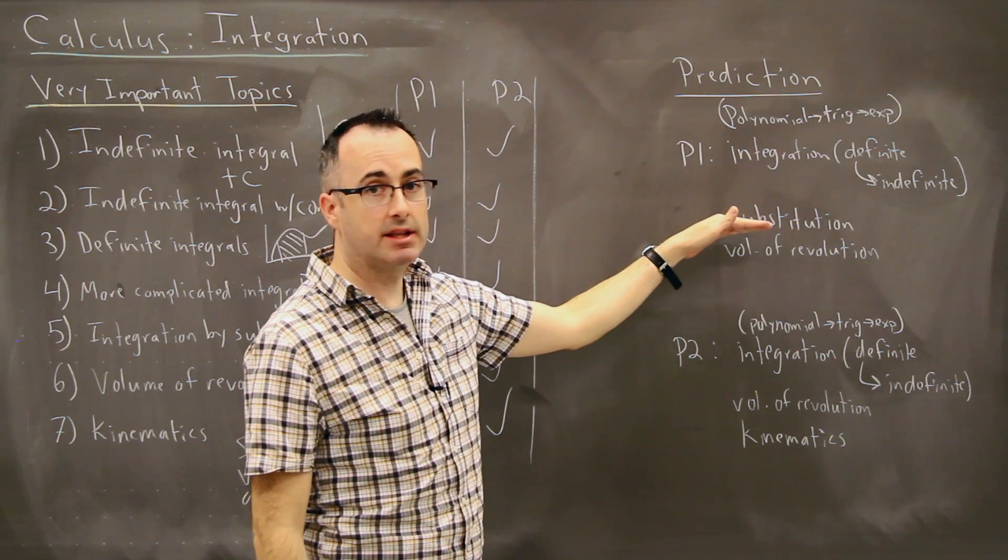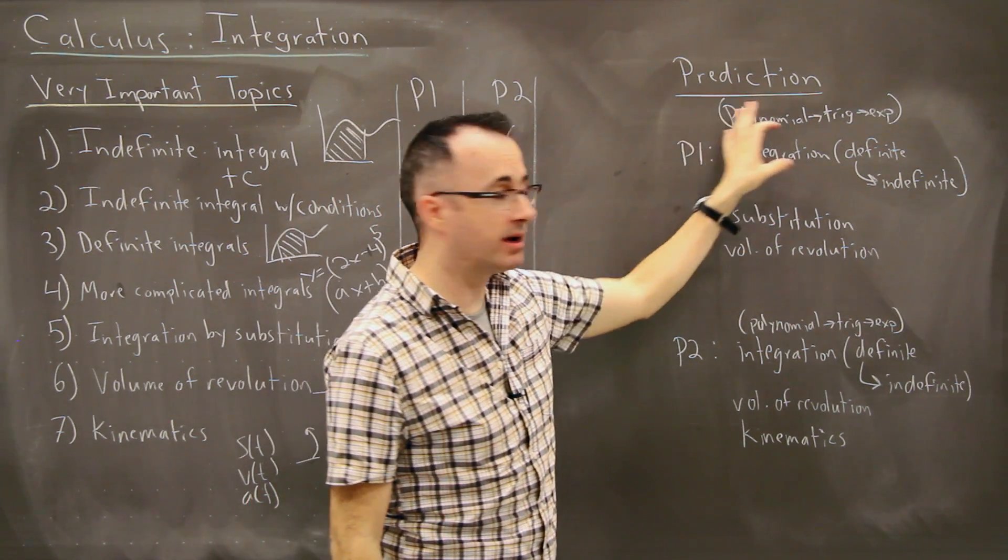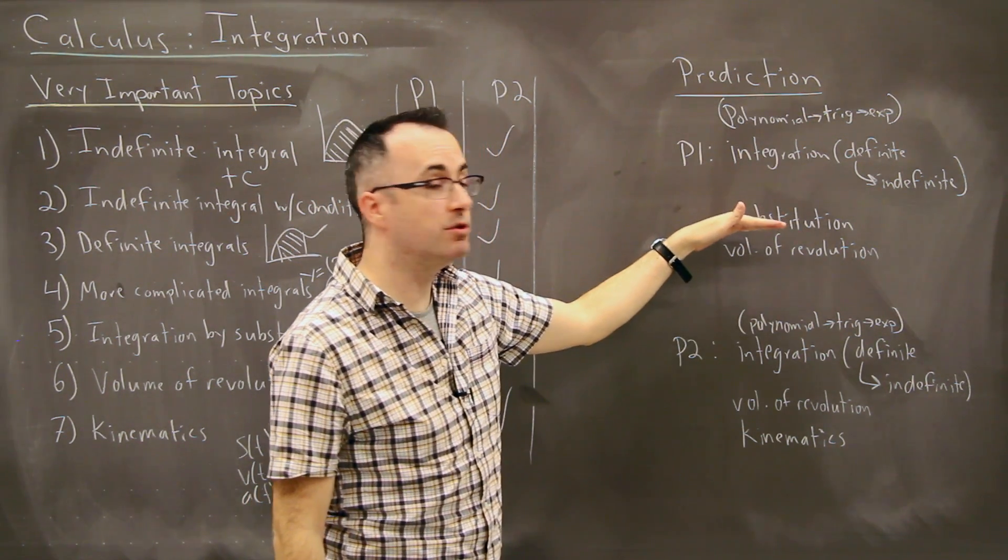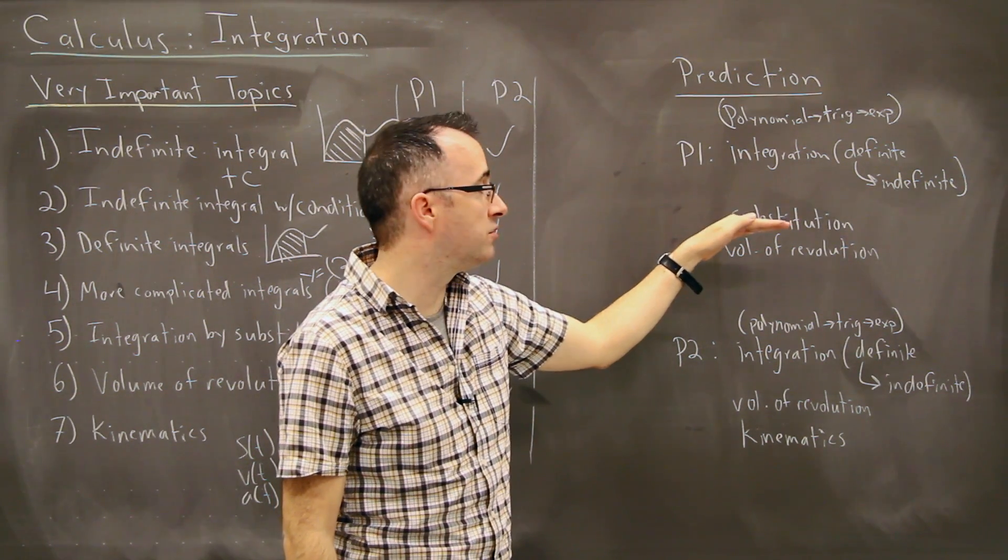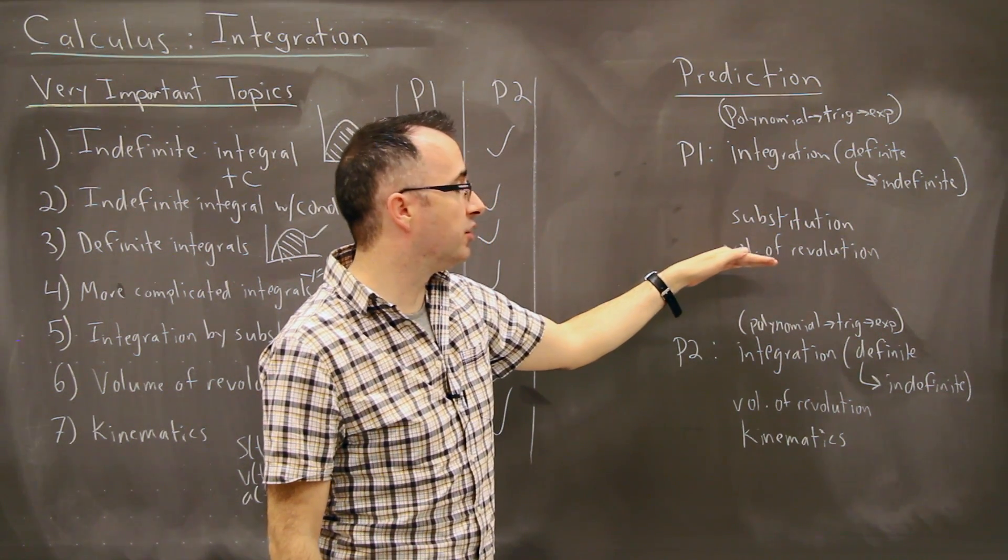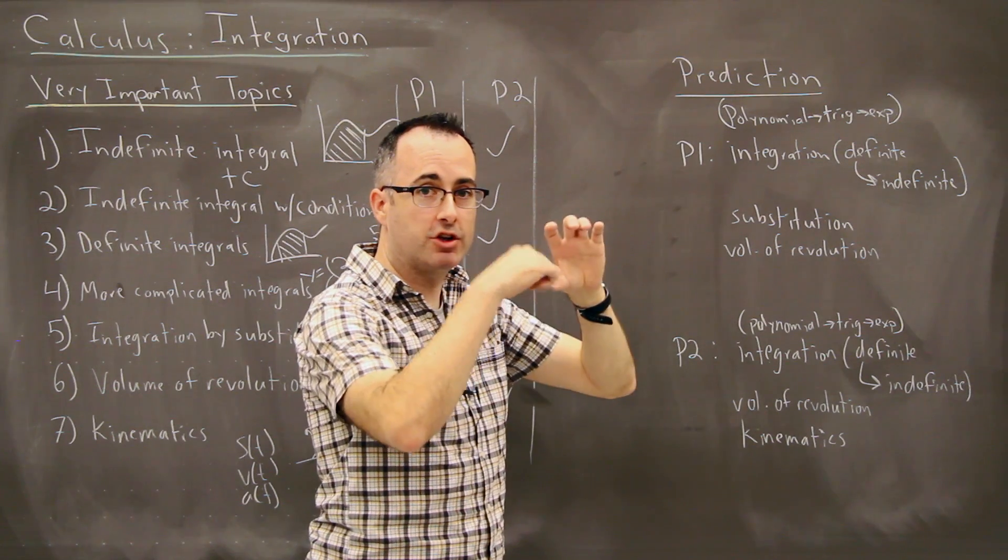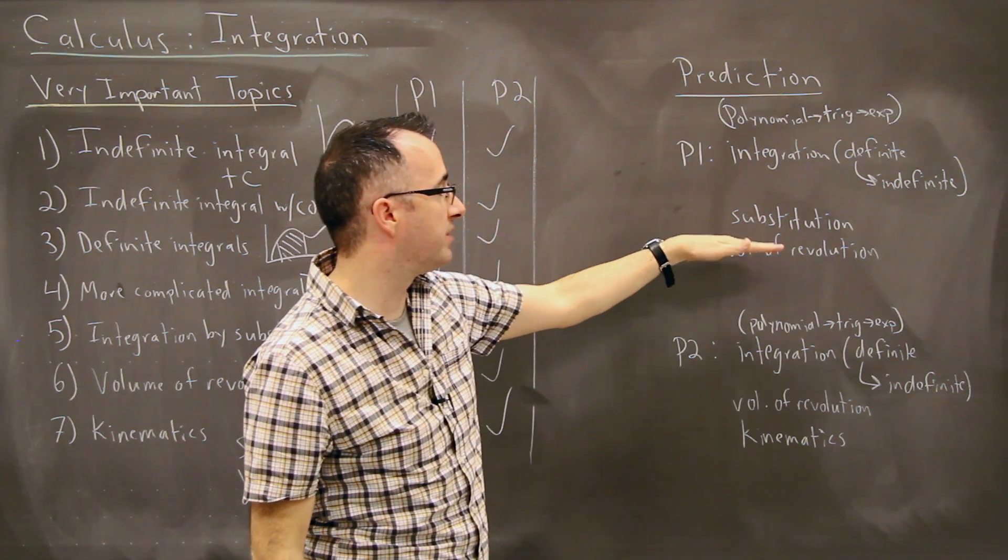Now for paper one, the next most likely thing you're going to have to do, other than just a generic integration, is going to be to use integration by substitution. And that's the one that's really difficult for a lot of students. Then we have volume of revolution, that shows up very often, taking a function and spinning it around. On paper one, without a calculator.